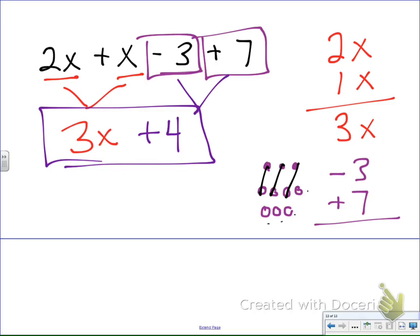Now, sometimes it's not going to be that easy. Sometimes they're going to mess them around and they're not going to be right next to each other. So we may have something that looks like this. Say negative 6x plus 8 minus x plus 9. So now not everything's all together, but that's okay. We're still going to do the same process.